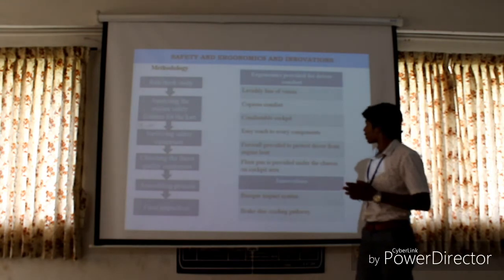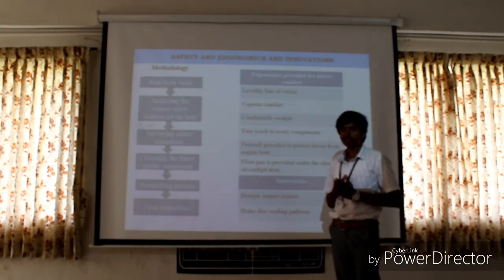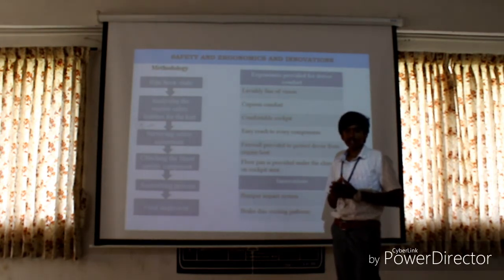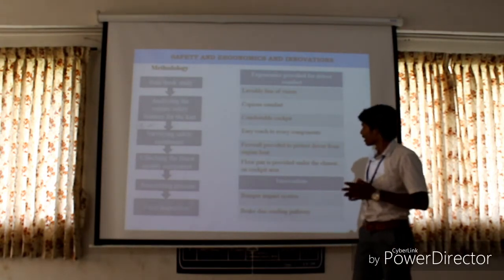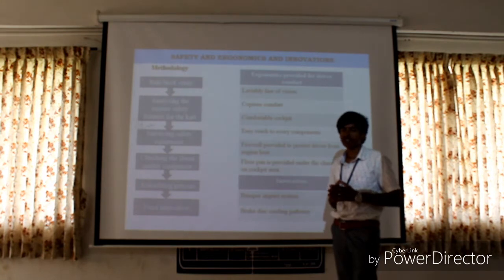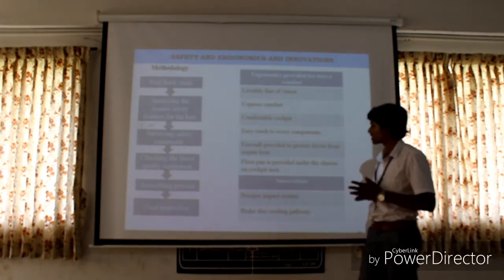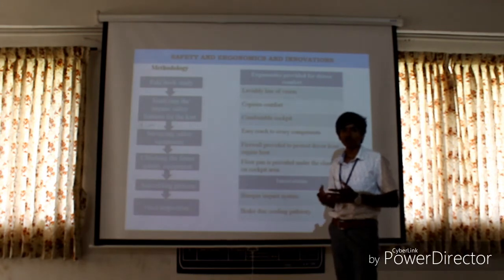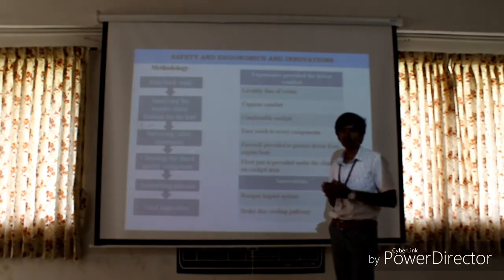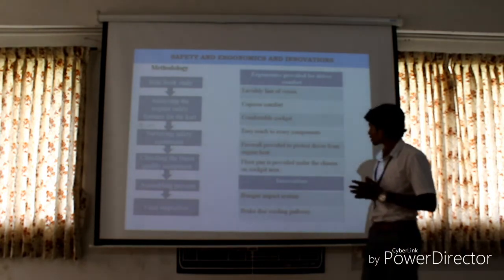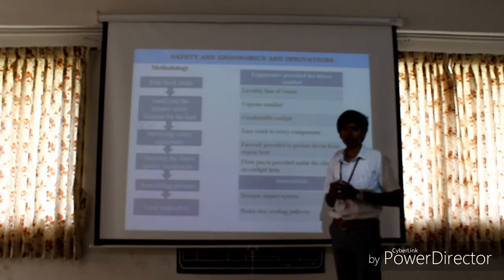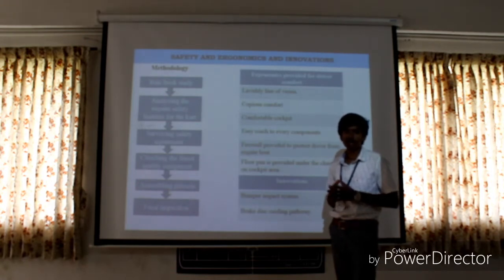Next is easy reach to every component. Whenever a driver drives a car, there is a requirement of easy approach to the equipment — if not, there might be some distractions. So we have kept a design where the driver can approach the equipment easily. Next is the firewall provided to the driver from the engine. There is an enormous amount of heat produced from the engine, which might distract the driver, so a firewall is provided between the engine and the driver. Next is floor plans provided under the chassis, so that unwanted foreign material under the chassis does not enter the cabin of the cart.